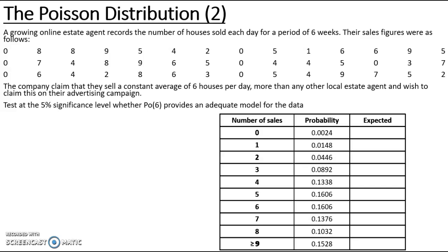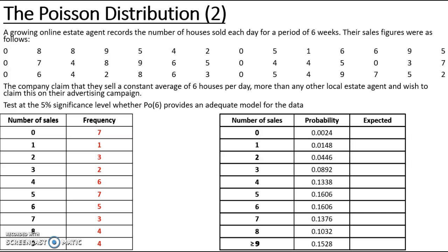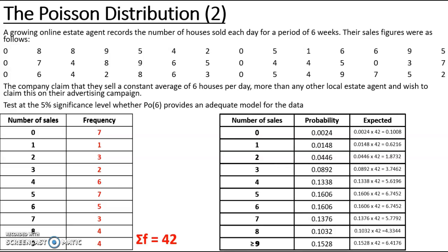For the expected frequencies I need to multiply each probability by the total frequency. Looking at the values, there are 42 days in which the number of houses sold was recorded. So I multiply each probability by 42 to get my expected values, giving me 10 expected values.